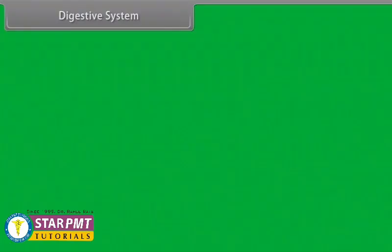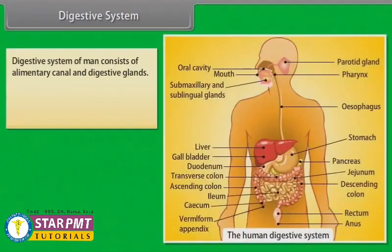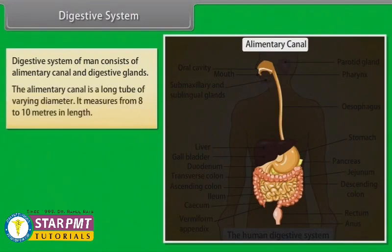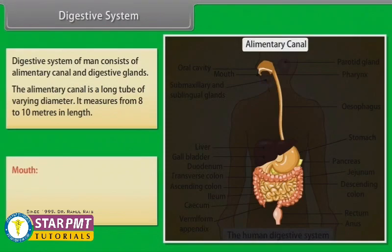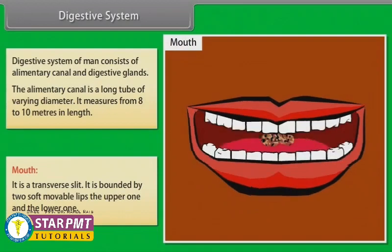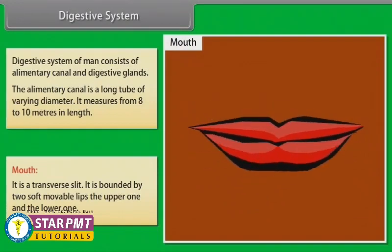The digestive system of a human consists of the alimentary canal and digestive glands. The alimentary canal is a long tube of varying diameter, measuring from 8 to 10 meters in length. The first part of the alimentary canal is the mouth, which is a transverse slit bounded by two soft movable lips — the upper one and the lower one.